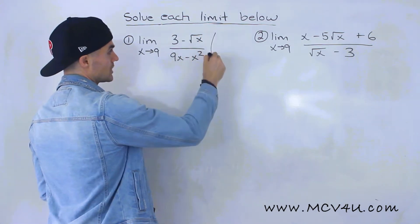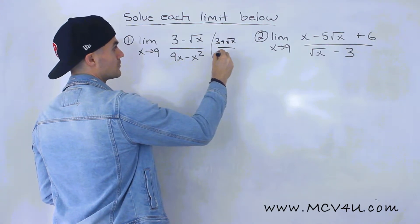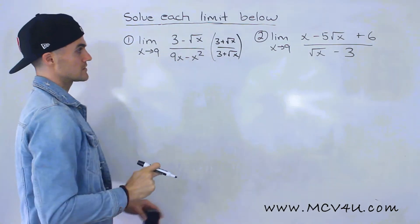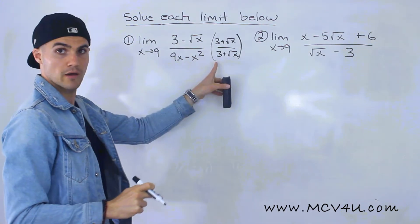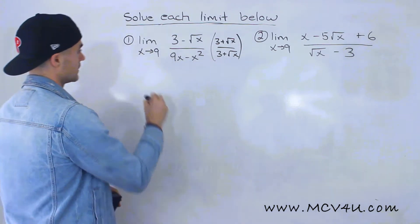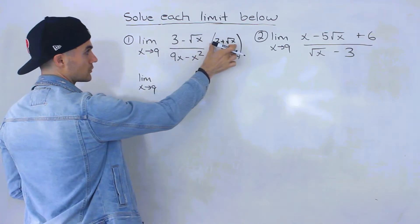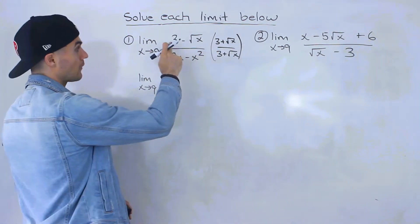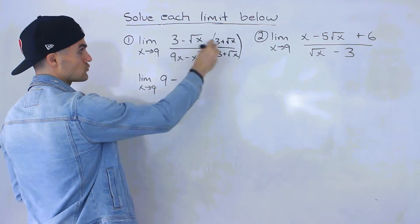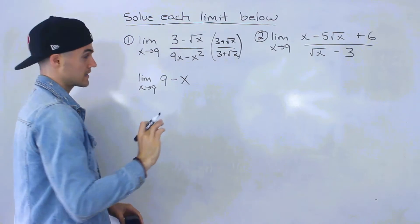If I rationalize this, multiply by 3 plus root x over 3 plus root x, the conjugate. We multiply the denominator by the conjugate as well. When you multiply something by its conjugate, we multiply the sides. We'd have 9 minus root x times root x, which is just x. So we'd end up with 9 minus x at the top.